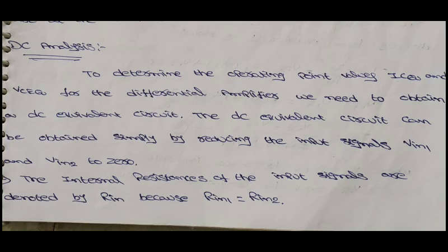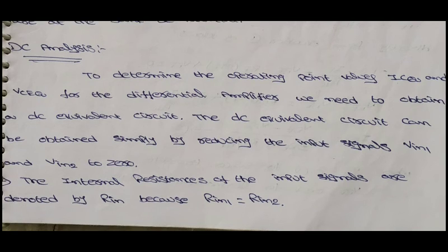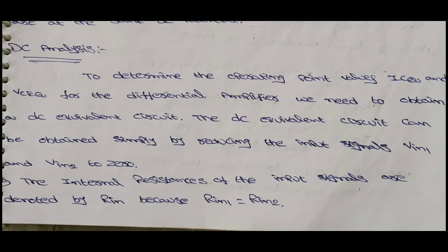If we learn the DC analysis in this topic, then that should be the same for the remaining three also, so there is no need to again learn the DC analysis for the remaining three. It is very important, so observe clearly and take notes. First: DC analysis. To determine the operating point values ICQ and VCEQ for the differential amplifier, we need to obtain a DC equivalent circuit.